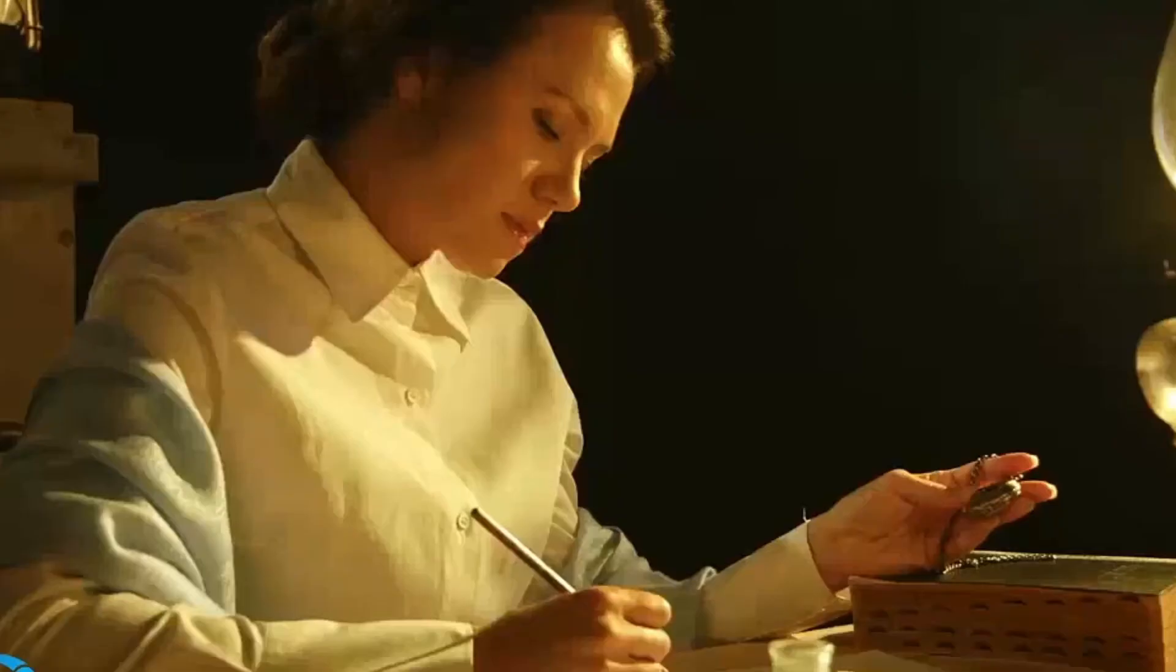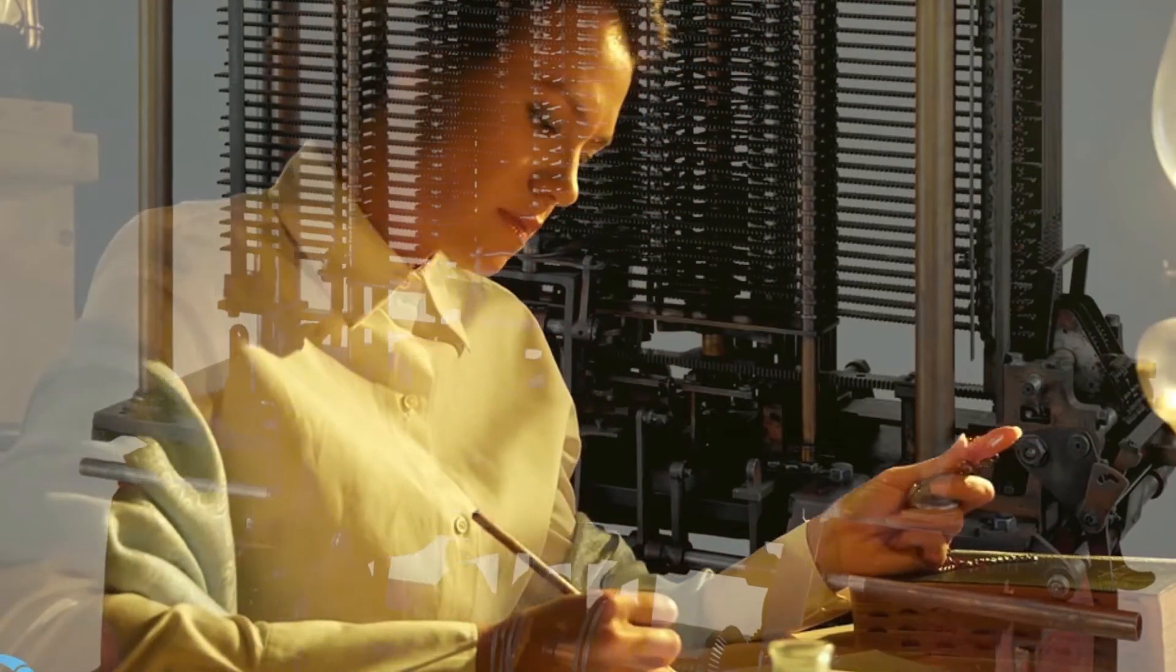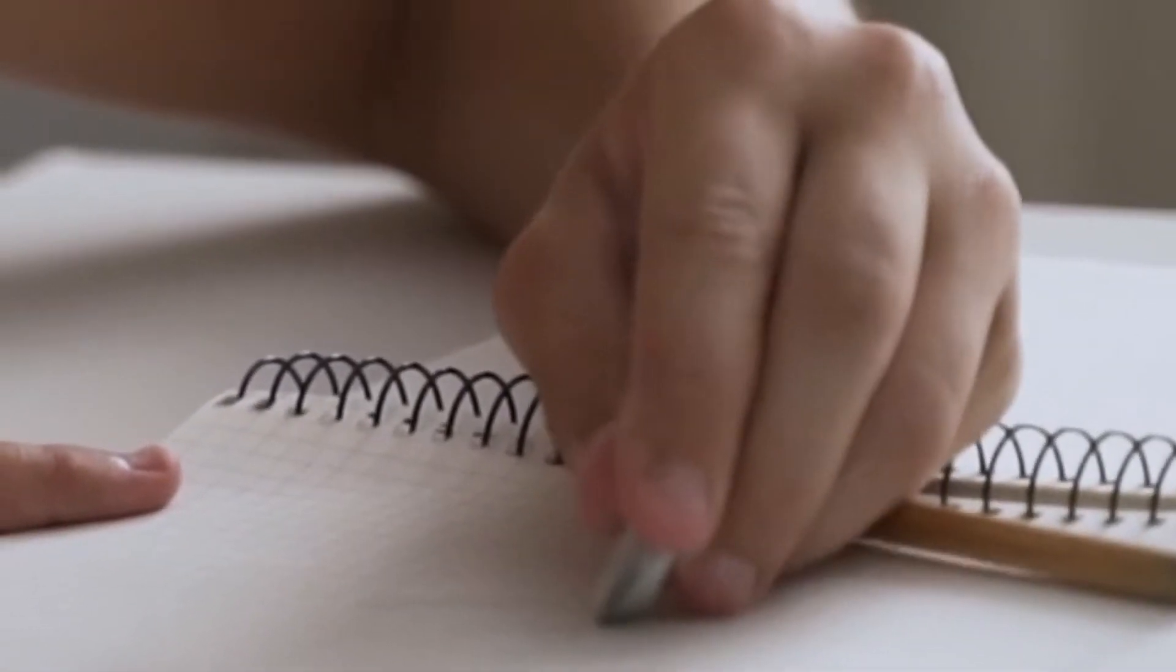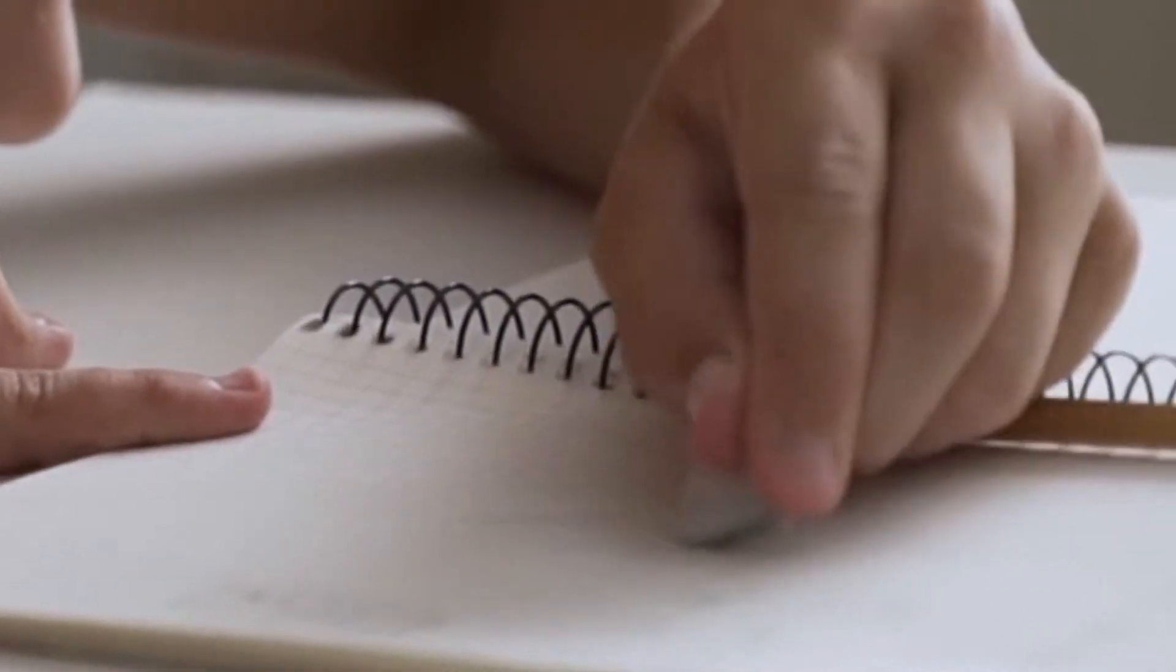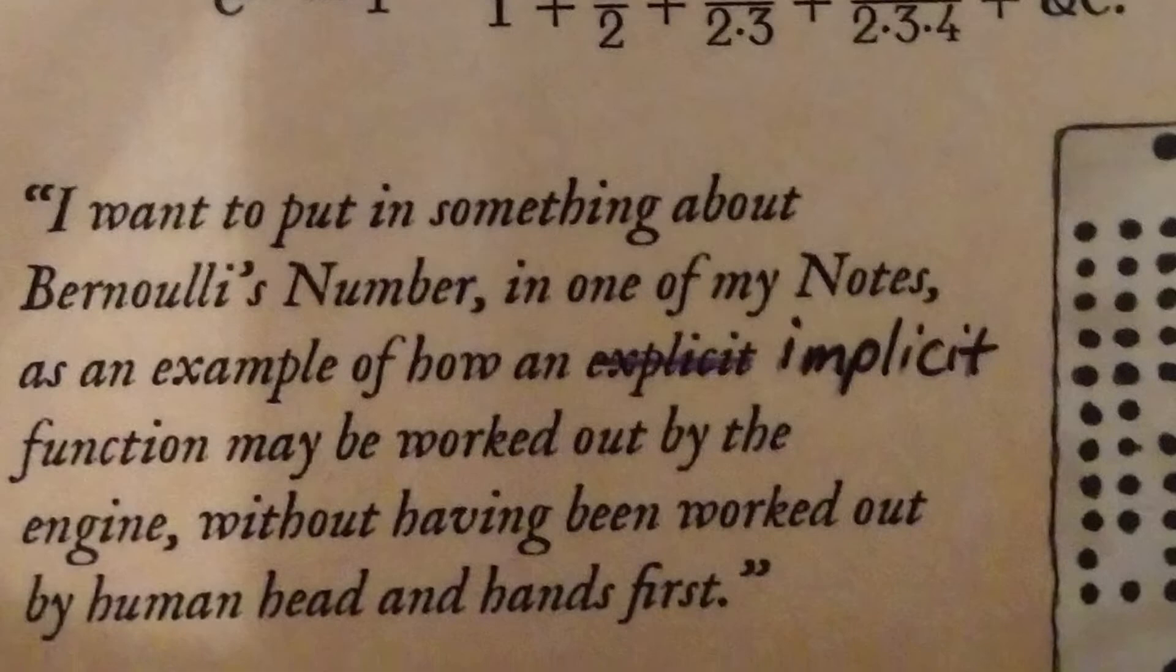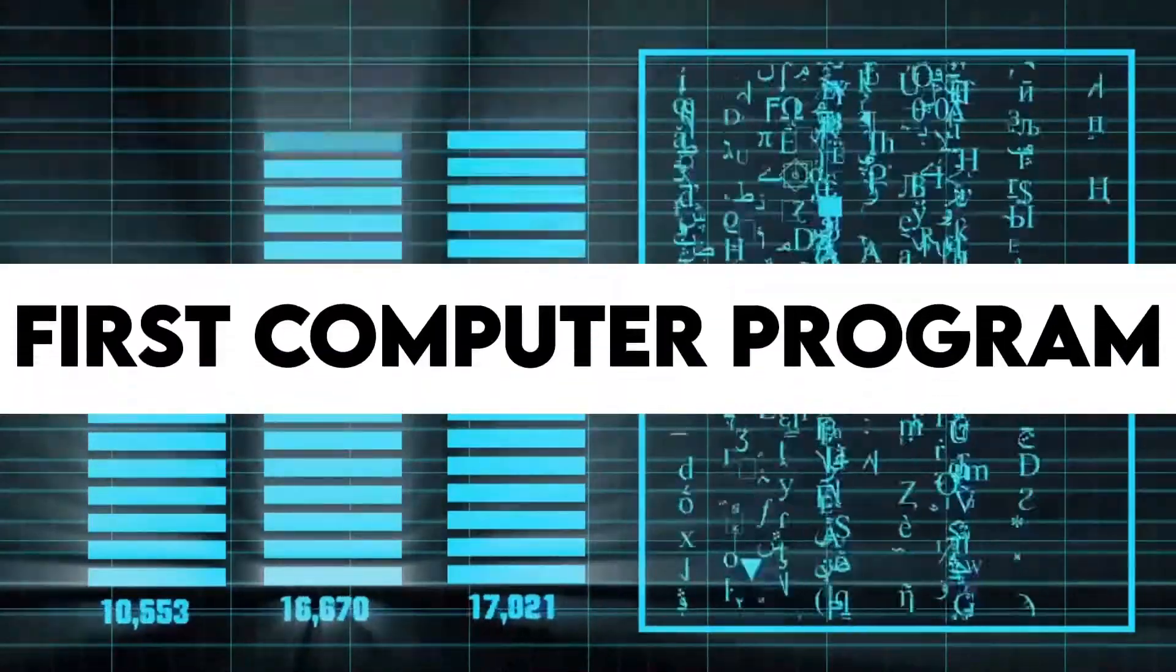In 1843, Babbage asked Ada Lovelace to translate an extremely detailed mathematical description of his engine written by an Italian mathematician. Ada worked on the task over the next nine months, but knowing the engine so well herself, she also added her own notes and ideas, even correcting some of the errors she found in Babbage's own calculations. Ada wrote about the possibility of using the engine to calculate Bernoulli numbers—an algorithm to be carried out by a machine and thus the first computer program.